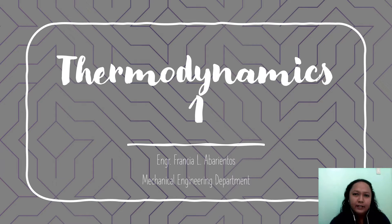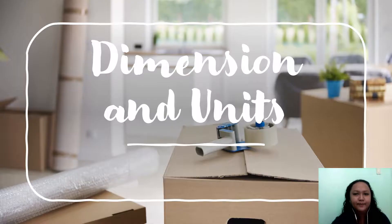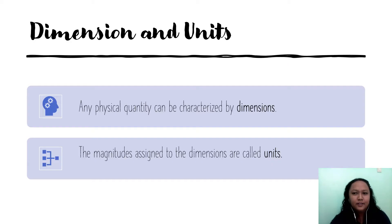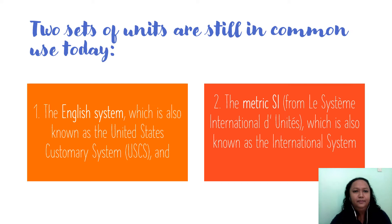Good day, class. Today we will continue the discussion about thermodynamics and the basic principles and concepts needed in our subject. We will review the different dimensions and units used in problem solving in thermodynamics. First, what is the difference between a dimension and a unit? A dimension is any physical quantity that can be characterized, while a unit is the magnitude assigned to the dimension.